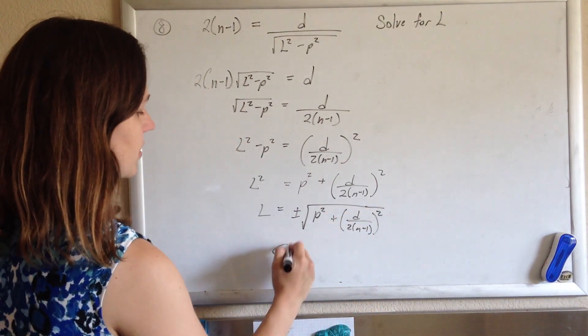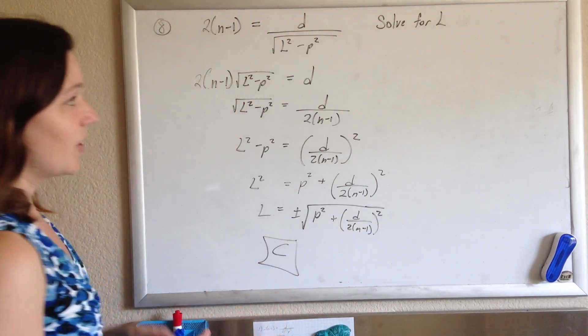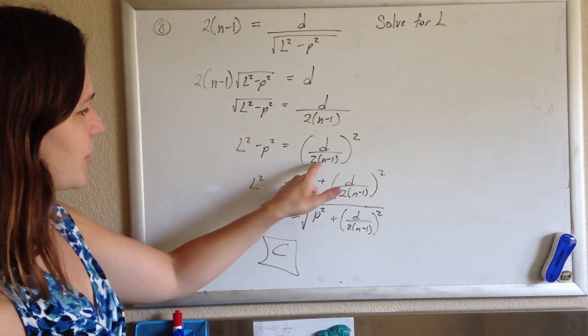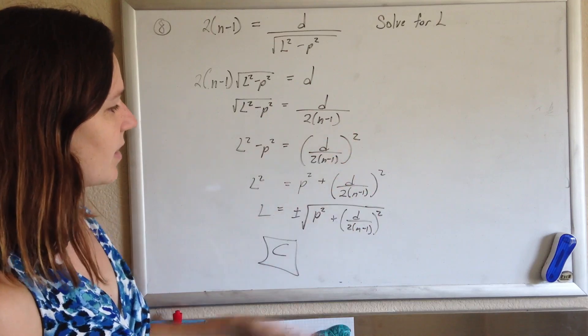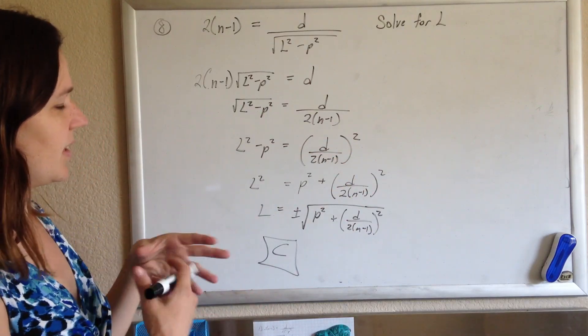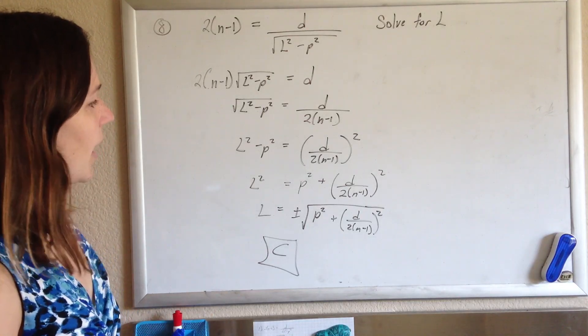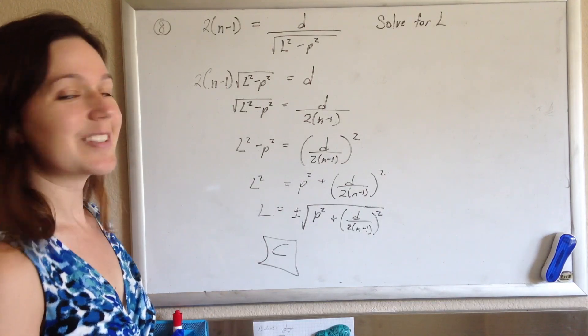And that answer is C. So pretty darn nice. You'll notice we didn't distribute this or square anything as we went. We noticed that in the answers they weren't doing that so we didn't bother. And yeah, that's it.